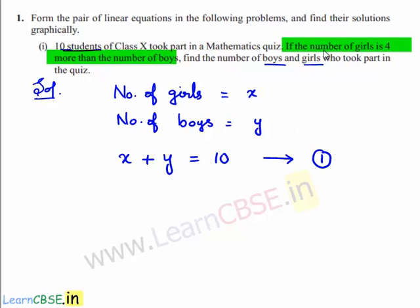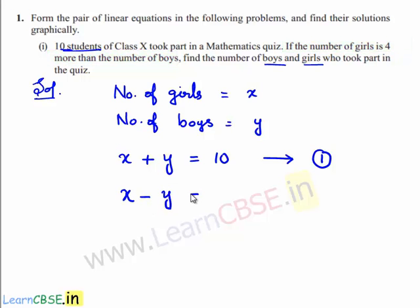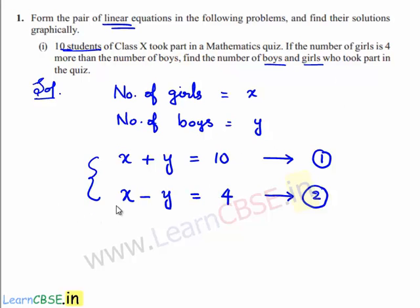According to the second condition, the number of girls is 4 more than the number of boys. Since x is the number of girls and y is the number of boys, x minus y is equal to 4. This is the second equation. So we have found the pair of linear equations: x plus y equals 10, and x minus y equals 4. Now we have to solve these linear equations graphically in order to find the values of x and y.